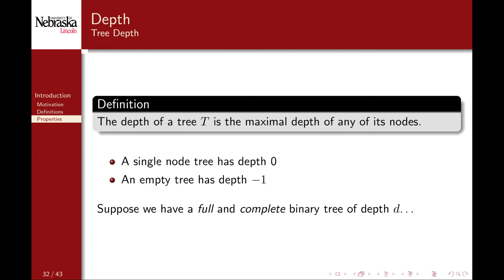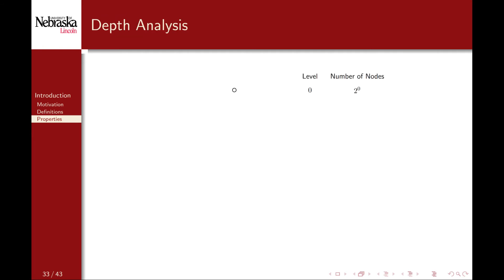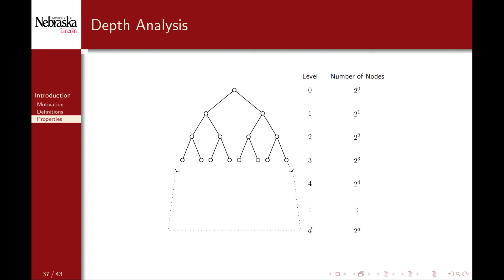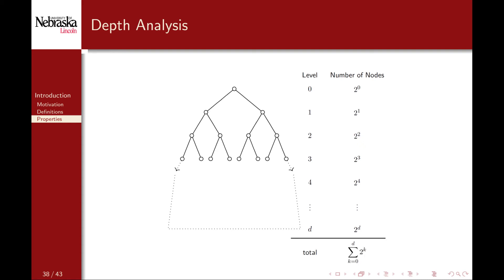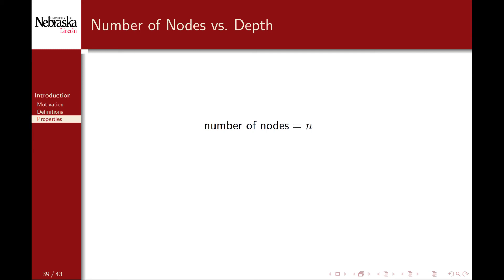Suppose that we have a full and complete binary tree of depth d — that is, both children of every node are present up to the last level d. At level 0 we have a single node, the root. At depth 1 there are two nodes. At depth 2 there are four nodes. At depth 3 there are eight nodes. The number of nodes at each level grows by powers of 2, so at depth d we have 2^d nodes. The total number of nodes n equals the sum of powers of 2 from 0 up to depth d, which has a well-known closed form solution of 2^(d+1) - 1.